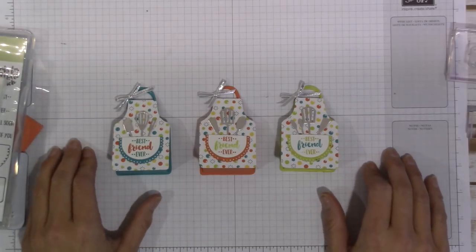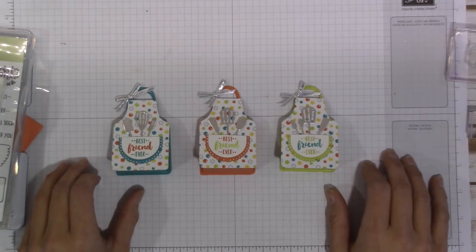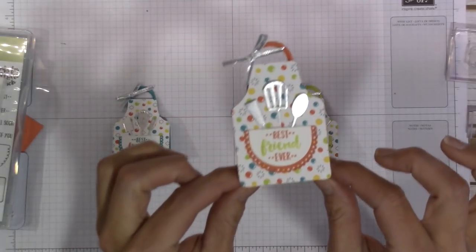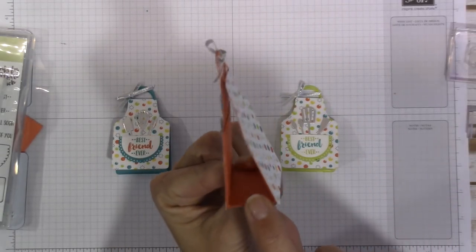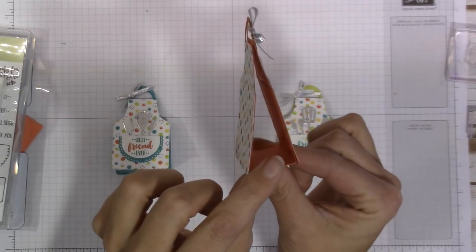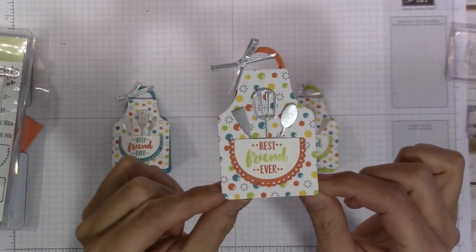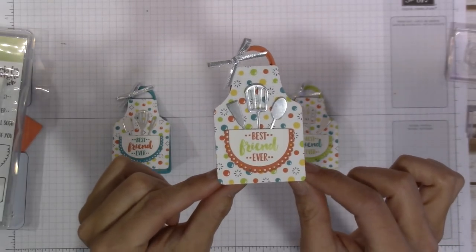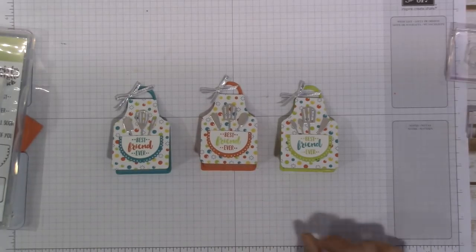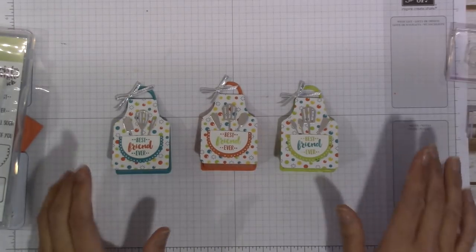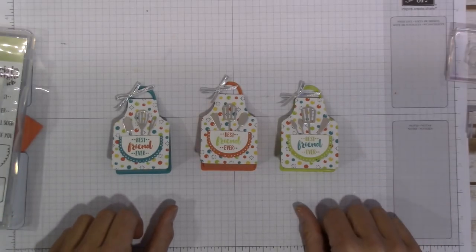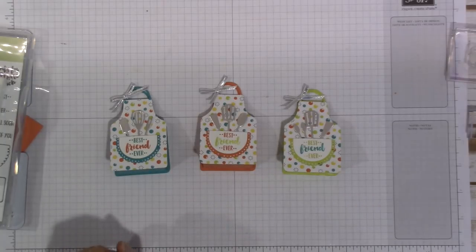Hey guys, it's Jen over at worldofjencraft.com and this is our project for today. It is the cutest little chocolate nugget holder, like Hershey's or whatever. I sat down and actually came up with this all by myself today, which is crazy. Yeah, it's really super simple but I was kind of pretty tickled with the way it turned out.